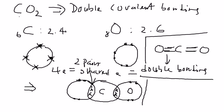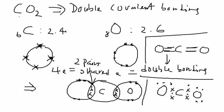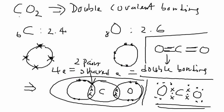Another way to draw the dot and cross diagram: you have one carbon with four electrons at the outermost layer, then oxygen on the right contributing two electrons — you see two pairs in the overlapping area. Another oxygen is on the left, and you draw all six electrons for oxygen: two here, two here, two here, and two here. So there are two ways to draw the dot and cross diagram. That's all for this lesson.